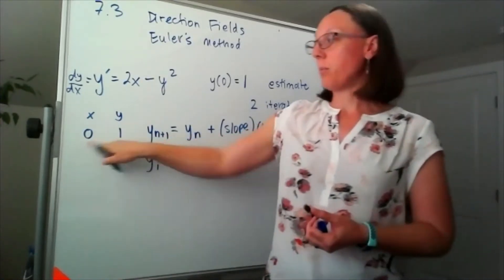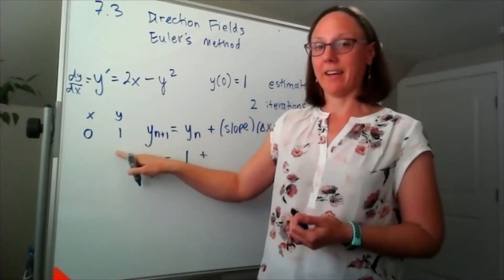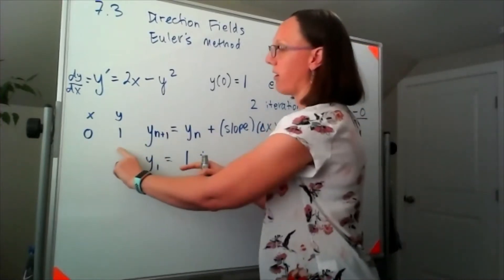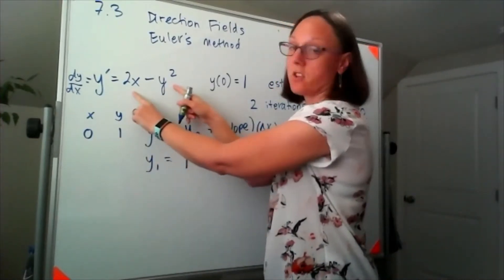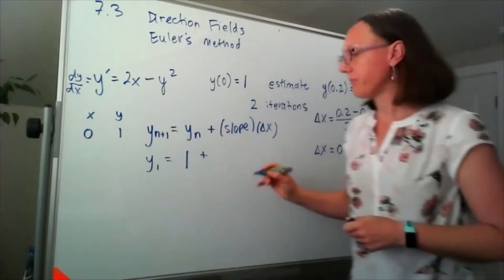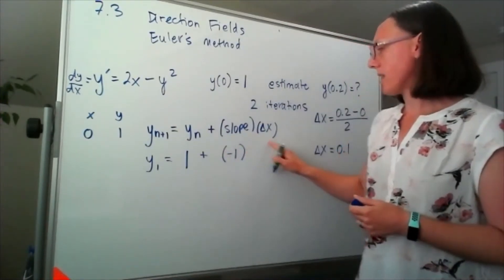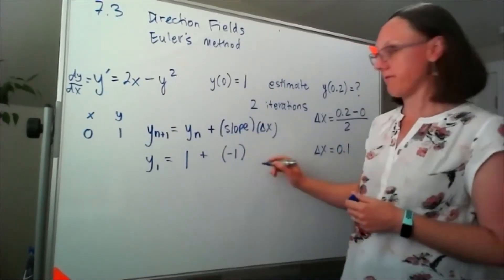Now I need the slope at the point I'm currently standing at. So if I plug in 0 and 1, I get a slope of negative 1. So I'd have a slope of negative 1 times that delta x that we just found.